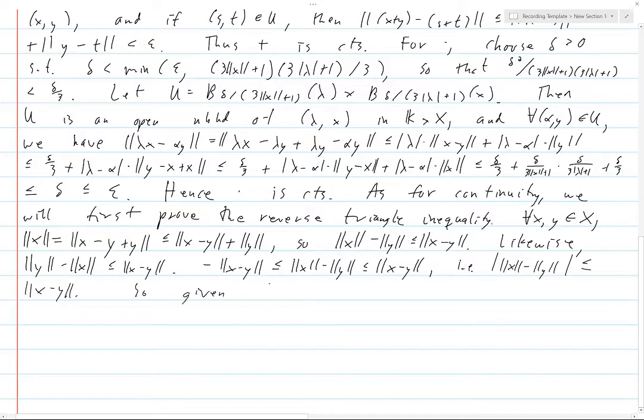So given x in X and epsilon greater than zero, for any y in the ball of radius epsilon around x, the difference in the positive real numbers of the images under the norm of these two points is less than or equal to the distance between the two points in the original space, which is less than epsilon.